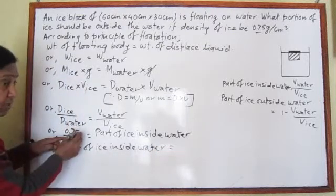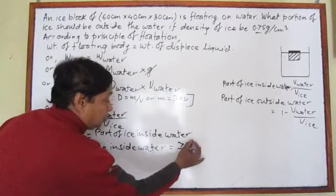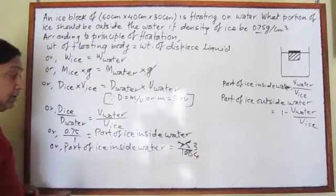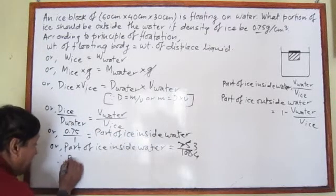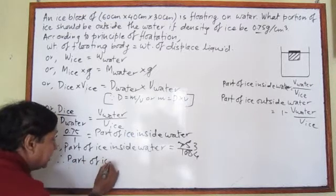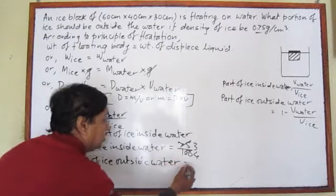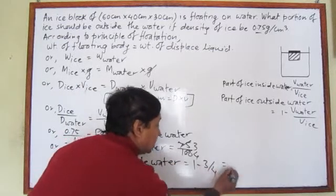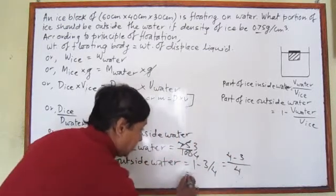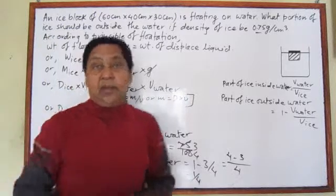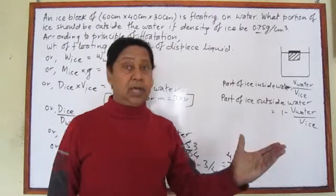So the part of ice inside water equals 0.75 divided by 1, which equals 75 upon 100, simplifying to 3 by 4. Therefore, the part of ice outside water equals 1 minus 3 by 4, which is 4 minus 3 over 4, giving 1 by 4. Out of every 4 parts, 1 part is outside the water.